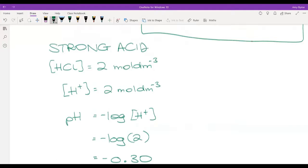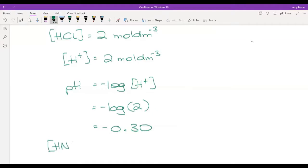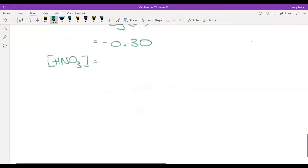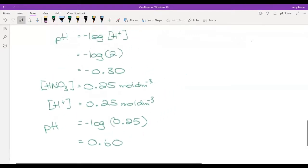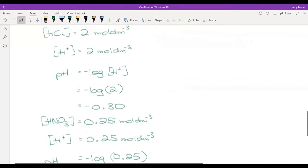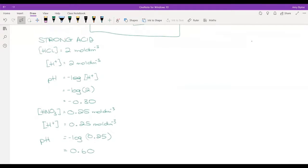That's how we calculate for a strong acid. Most of the time you'll be given HCl. The other option is something like nitric acid. So let's have a concentration of nitric acid of 0.25 mole per DM3, which means that the concentration of H plus equals 0.025 mole Dm minus 3. So pH is equal to neg log 0.25, which gives us 0.60. Remember pHs do not have units. I've just expressed these to two significant figures.